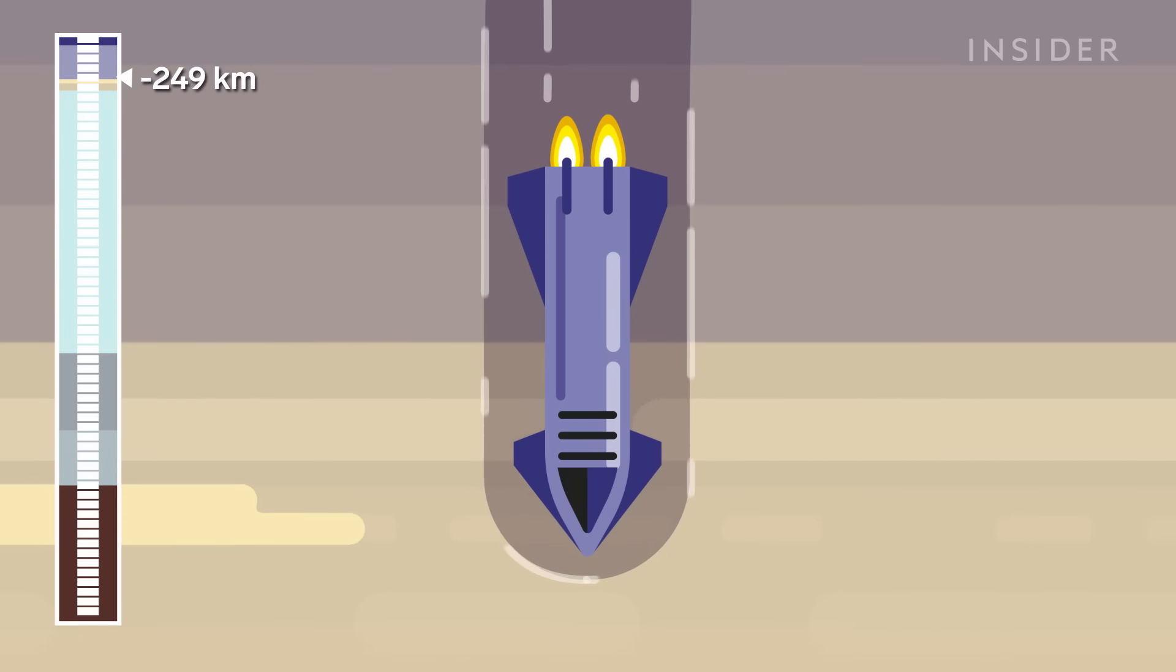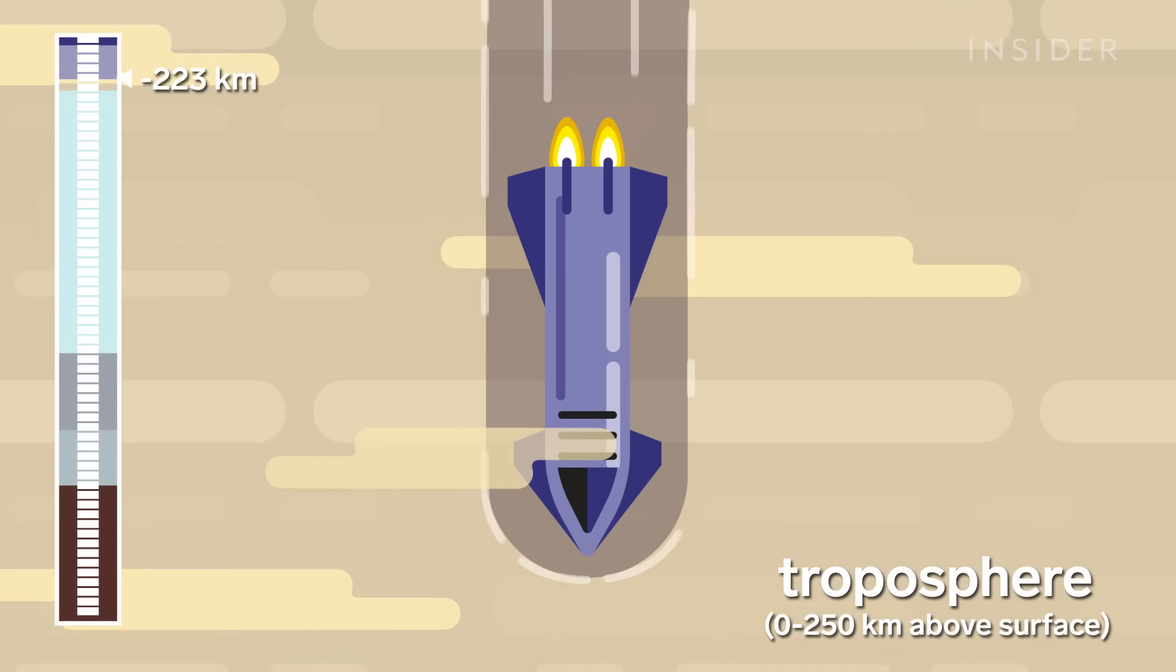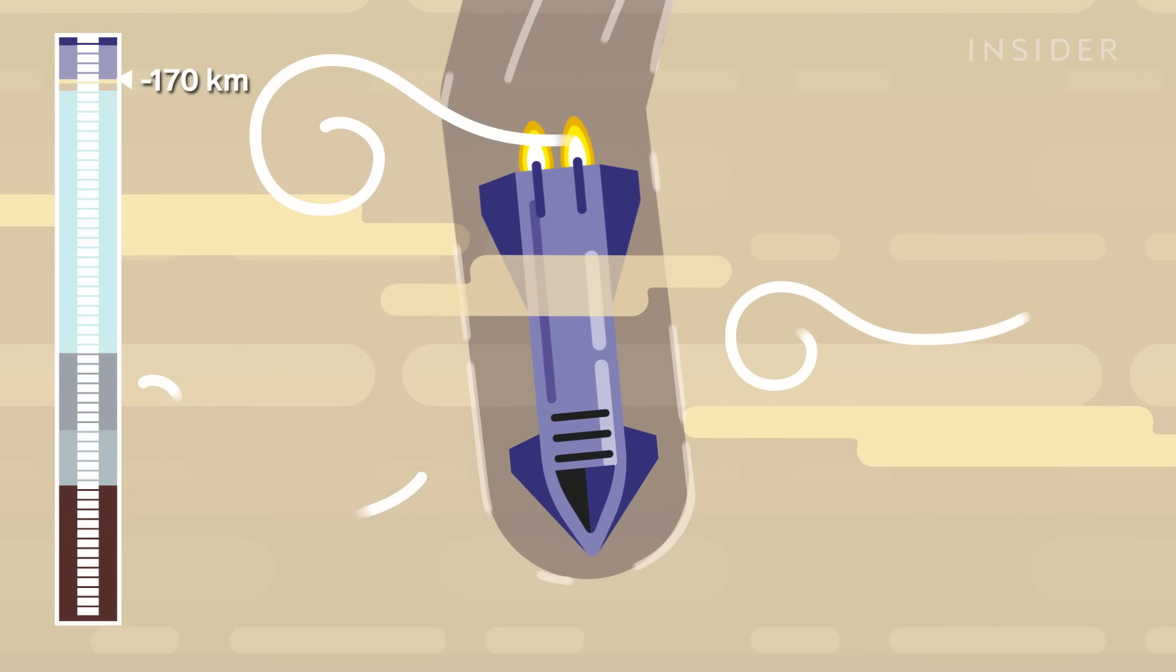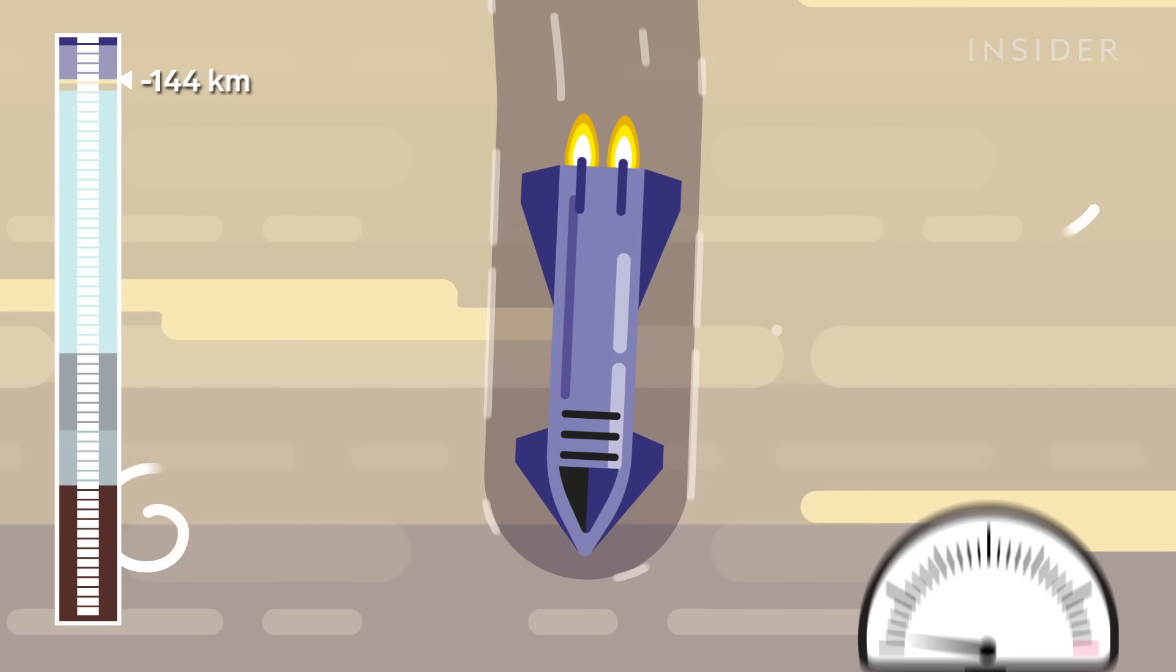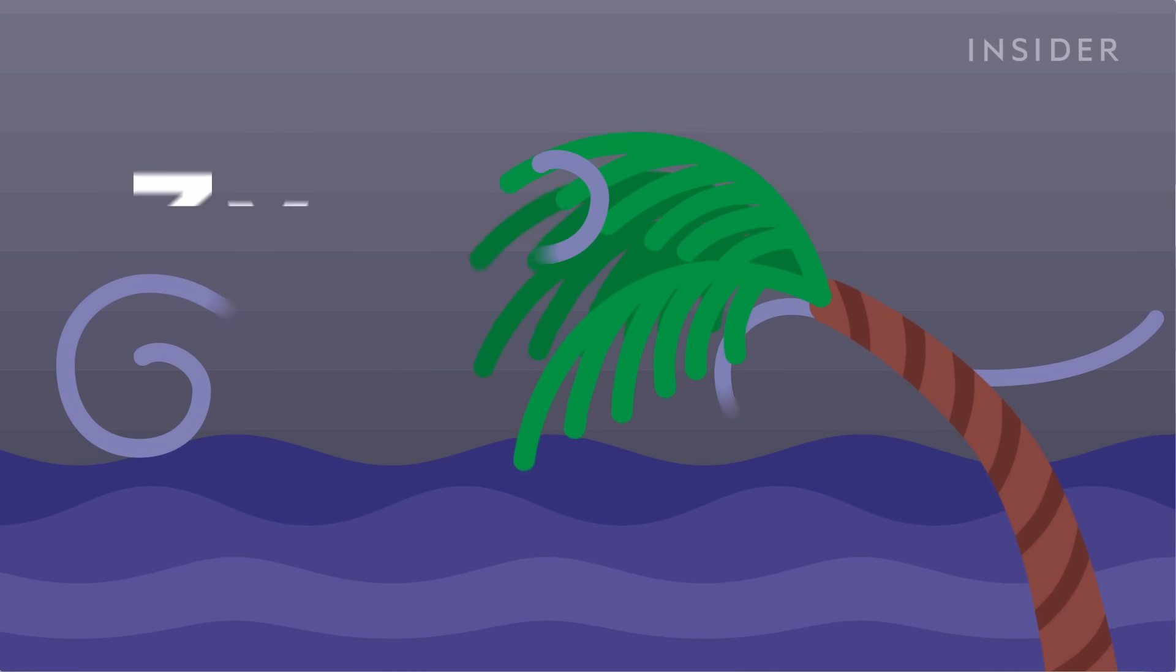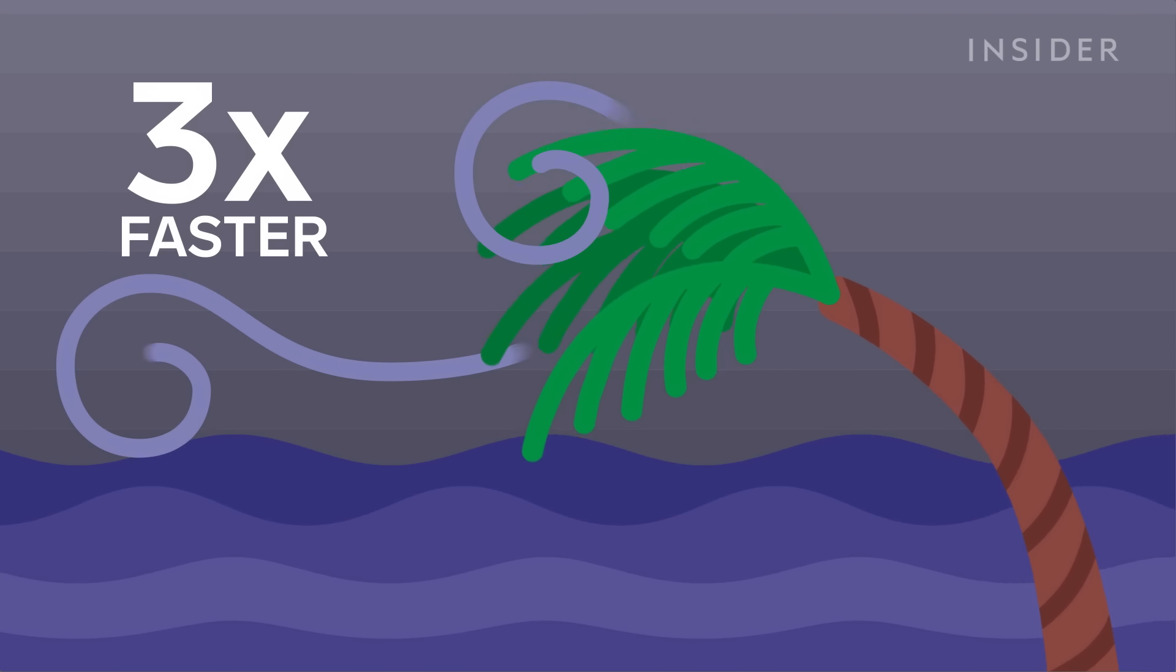Next, we'll hit the troposphere, the part of the atmosphere where weather happens. So watch out! Powerful winds may slam into us at nearly 400 meters per second. That's over three times faster than the strongest hurricanes on Earth.